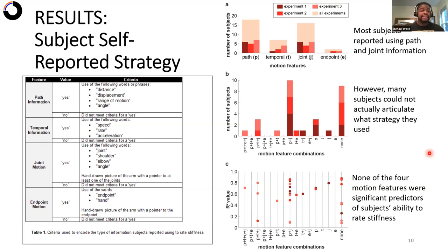So this kind of tells us that subjects may not necessarily be able to articulate what it is that they're doing. We hypothesized that this may be because estimating stiffness is something that's so fundamental to the internal model. It's something that we can't necessarily articulate what we're doing because we're doing it very innately.